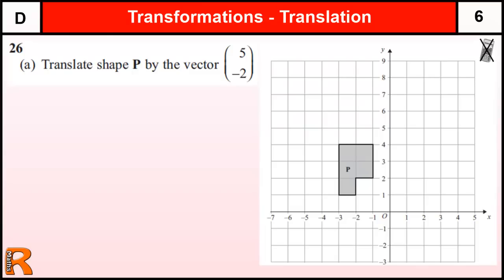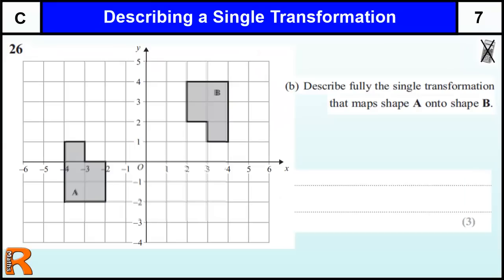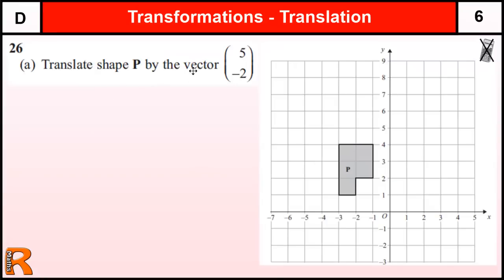Question 26 is a transformations question. It starts off with translating shape P by the vector 5, minus 2 — so you've got to draw something on there. Then it goes on to part B where you've got to describe a transformation. Describing transformations is a grade C topic, but translating a shape by a vector is a grade D topic, so this question mixes two parts.